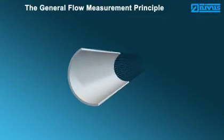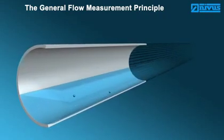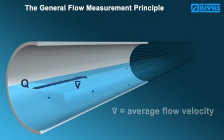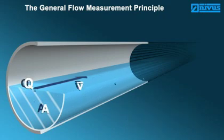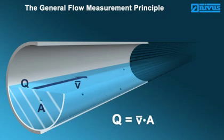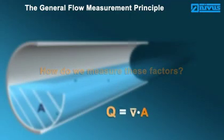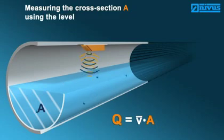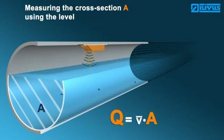The flow measurement principle. Flow cannot be measured directly. There are various factors required to detect the flow Q, such as the average flow velocity and the flow cross-section. From this the general formula is obtained: Q equals V average times A. The flow cross-section A is determined by continuously measuring the level in consideration of the channel shape. If the level changes, the flow cross-section will change accordingly and hence flow will change as well.